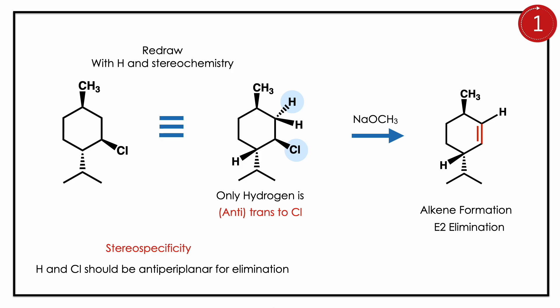For elimination, the hydrogen and chlorine should be anti-periplanar. Here, only one hydrogen is anti-periplanar, so you have alkene formation, which proceeds by the E2 mechanism. The final product is thus determined.